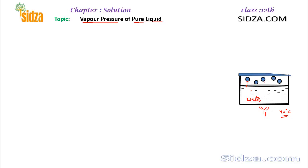In the vapor phase, gas molecules are in random motion and can move in all possible directions. These molecules can strike and collide with the liquid surface, and by doing so they lose energy and therefore enter back into the liquid state.